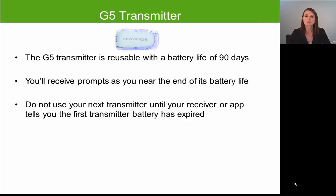Also, your display device will not allow you to start a new sensor session if you have less than one week of battery life left in that transmitter. You may have received either one or possibly two G5 transmitters. Make sure you only use one transmitter at a time — use one G5 transmitter until that three-month battery life is up, then discard it and start using your next G5 transmitter.